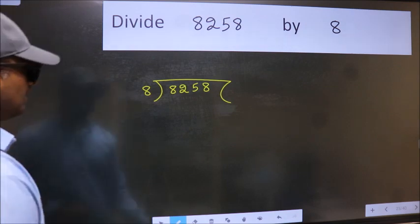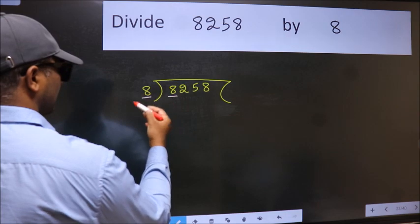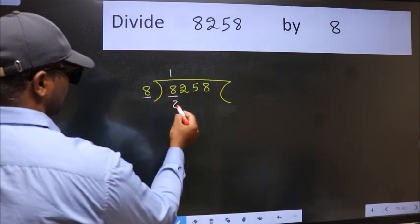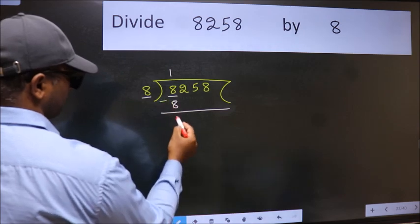Next. Here we have 8 and here 8. When do we get 8 in 8 table? 8 once 8. Now we should subtract. We get 0.